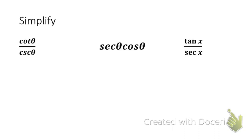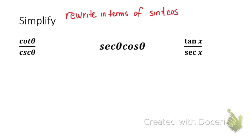What is cotangent equal to? When you're simplifying and verifying, it is helpful to rewrite in terms of sine and cosine. There really is no one right way to simplify and verify, but in the beginning, teachers will often say to start off by rewriting things in terms of sine and cosine. So what is cotangent equal to in terms of sine and cosine?